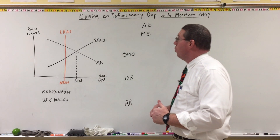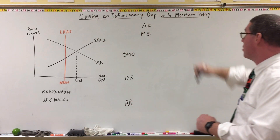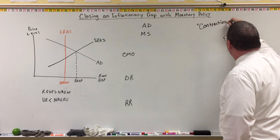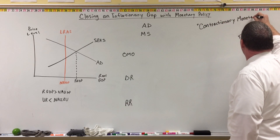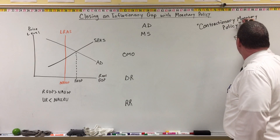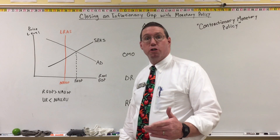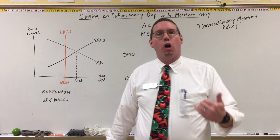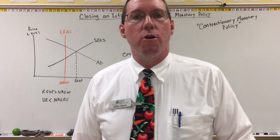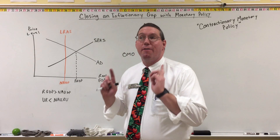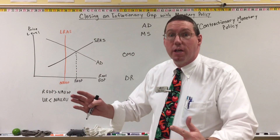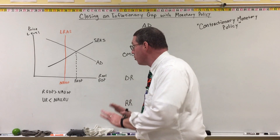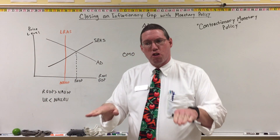We're going to talk about how the Fed will attempt to close an inflationary gap using monetary policy. When the Fed does this, we call this contractionary monetary policy. The reason we call it contractionary is because the Fed is trying to force an economic contraction — pulling back on economic output. Because economic output is out of control. We are overheating the economy, overusing resources, and that's going to cause bad things in the future. We need to slow down the economy just a little bit.